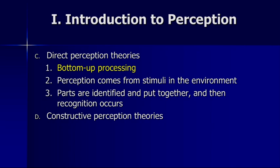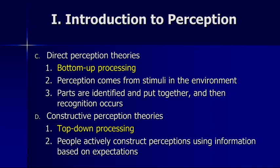Constructive perception theories are also an important part of understanding perception, and this includes what we call top-down processing. Top-down processing occurs because we actively construct perceptions using information based on our expectations. A holistic theory of perception requires both bottom-up processing and top-down processing. We'll look at instances which demonstrate clearly the influence of our knowledge on our perceptual processes.